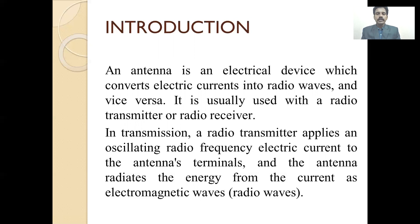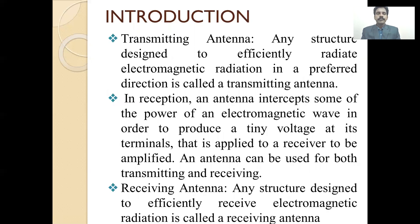In transmission, radio transmission applies oscillating radio frequencies — electrical current to the antenna terminals — and the antenna radiates energy from your current as electromagnetic waves. Any communication system involves basic components like a transmitting antenna as well as a receiving antenna. This transmitting antenna radiates electromagnetic radiation directly into the medium, either through free space or any particular device.